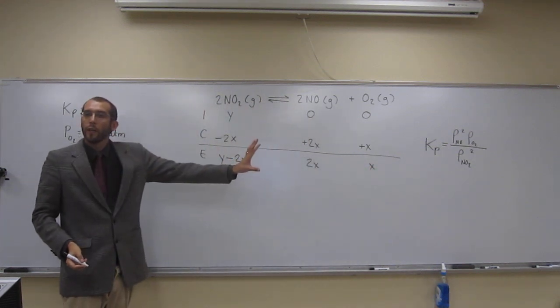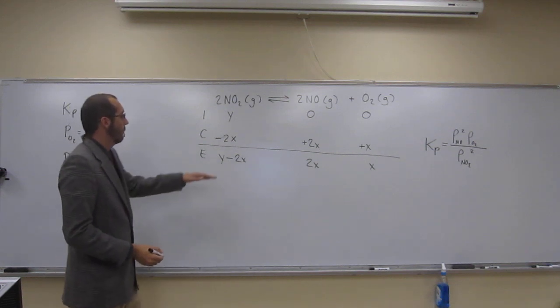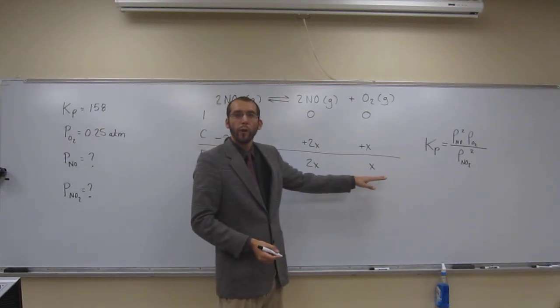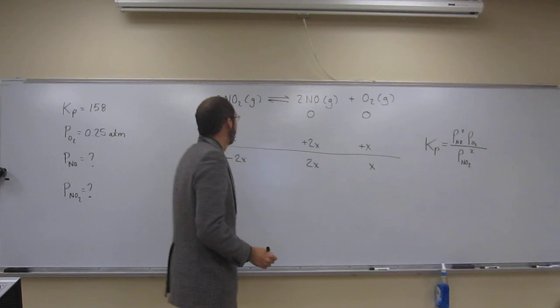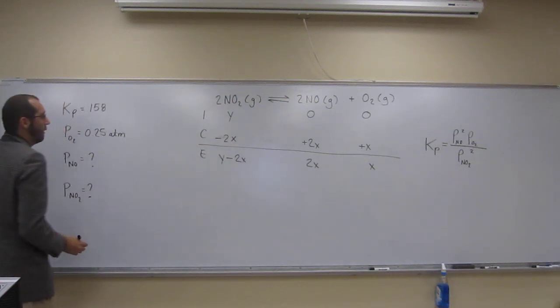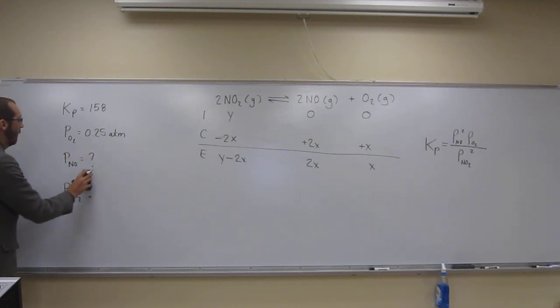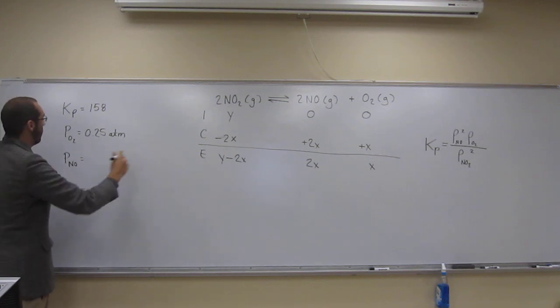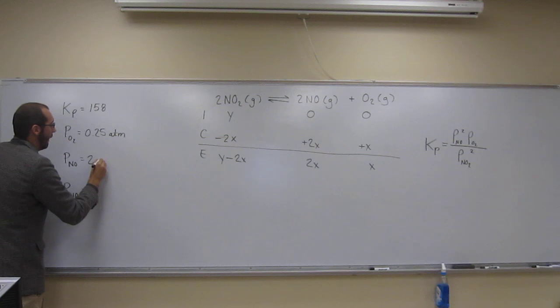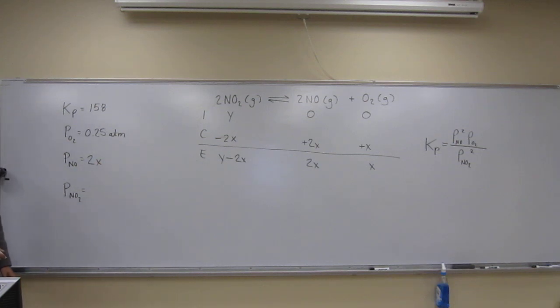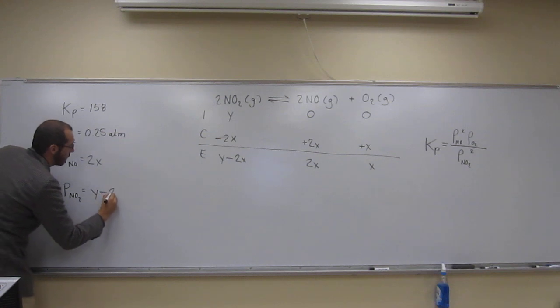So has everybody gotten to something like this? Remember, these are referring to the partial pressures. So hopefully you guys can see, right? Well, let's erase because we know what these question marks are now, right? So partial pressure of NO is going to be what? 2x, right? Partial pressure of this NO2, y minus 2x.